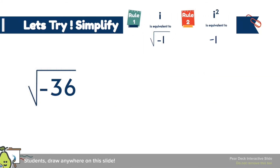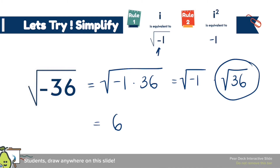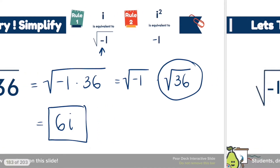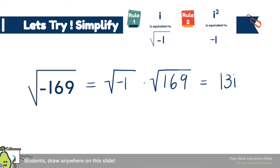Our next problem is √(-36). If I break this down into two numbers I get √(-1) × √36, which equals 6i — the 6 comes from √36 and the √(-1) becomes i using rule 1. Moving forward, √(-169) = √(-1) × √169 = 13i.